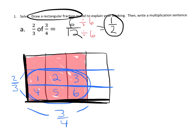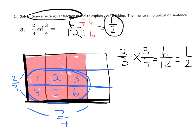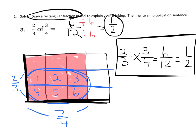So mathematically, the way we would show that is we would say 2 thirds times 3 fourths is equal to 6 twelfths, which is equal to 1 half. And that is how we would write it down using what would look like standard form.